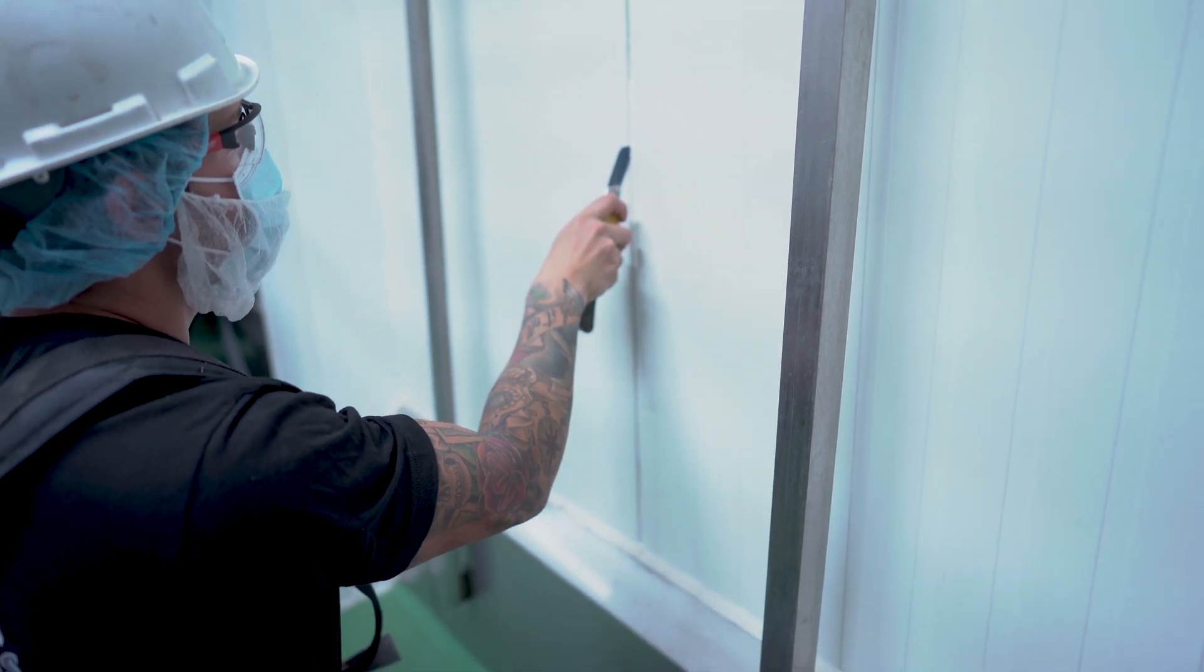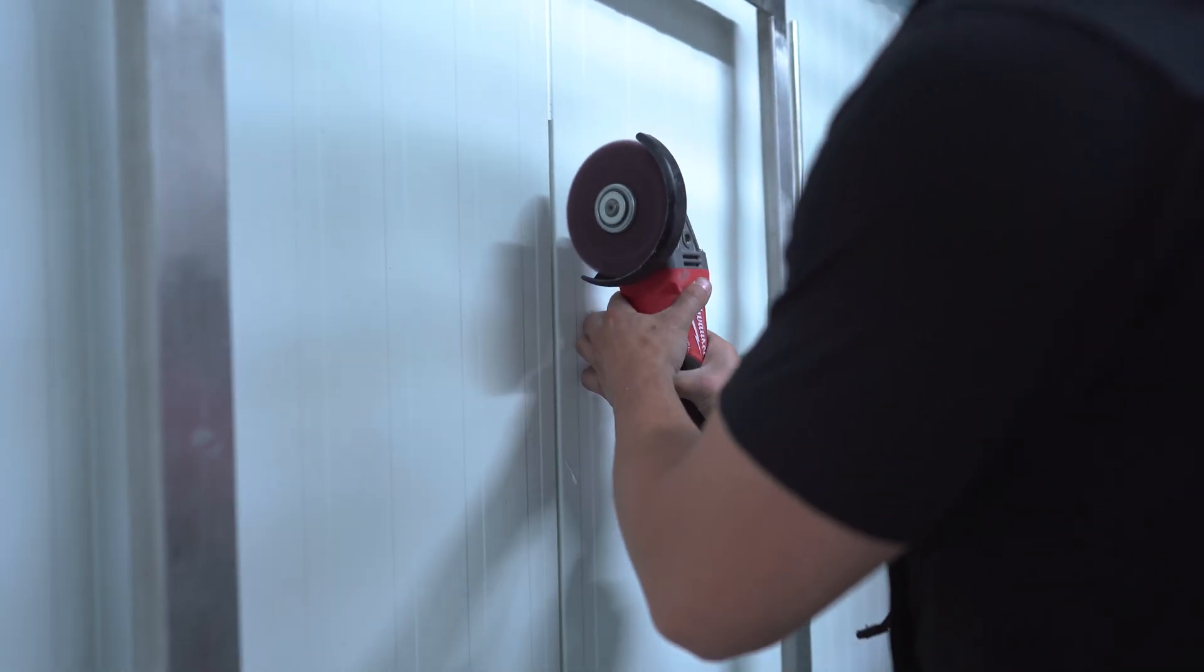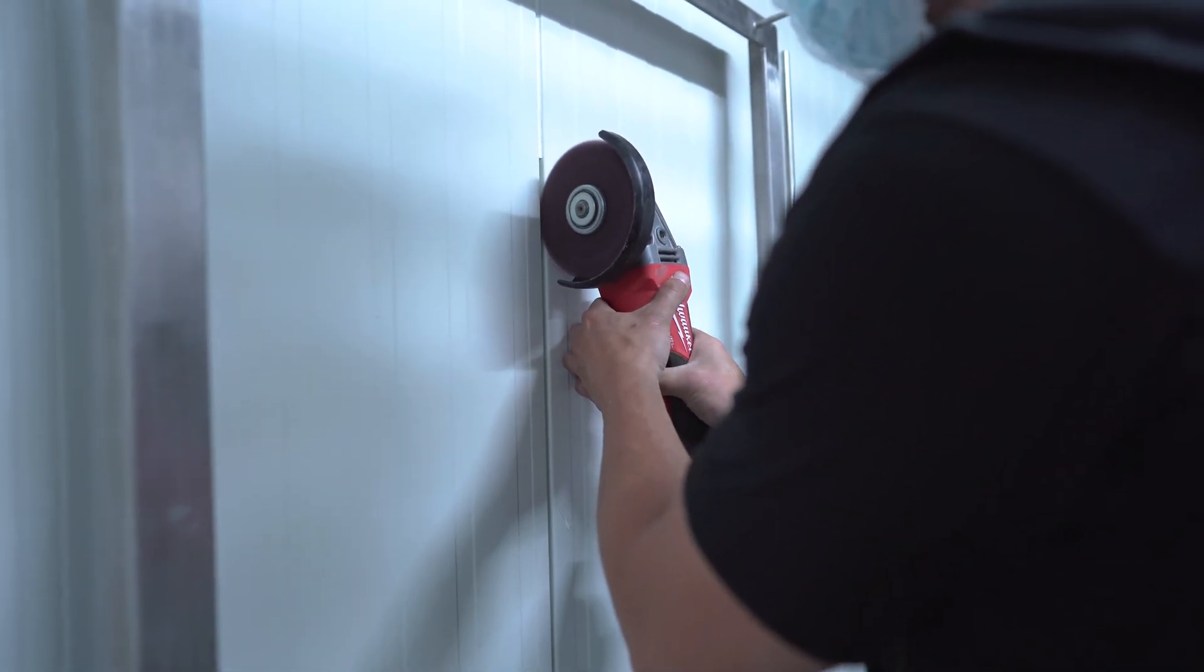For used panels, get rid of existing silicone or sealant in the joints using a grinder. Use an air compressor to get rid of dirt and dust.